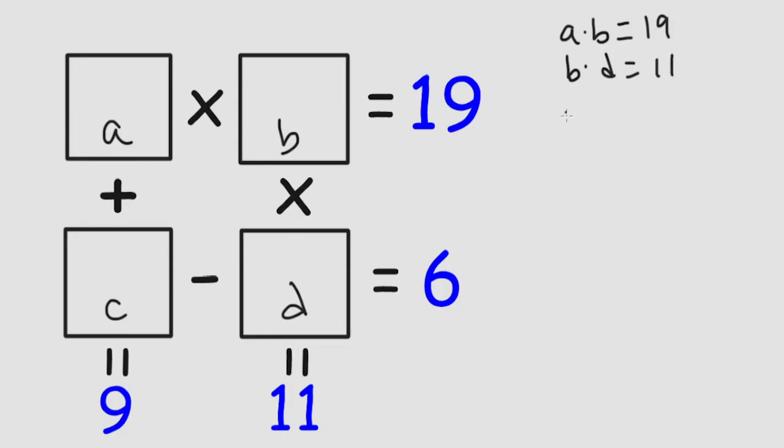Then we'll add these together. A times B plus A times D is equal to 30.